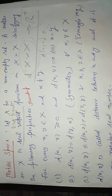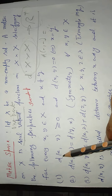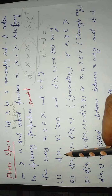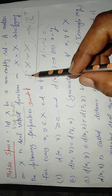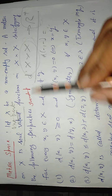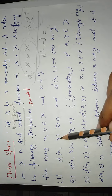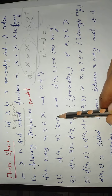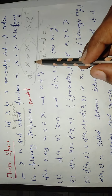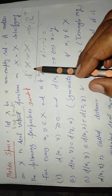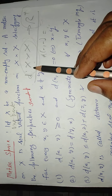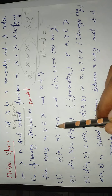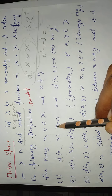What are the properties? We are representing this metric by the symbol d. d(x, y) is always greater than or equal to 0. The mapping is always positive. For every pair, the answer generated by d is always positive.